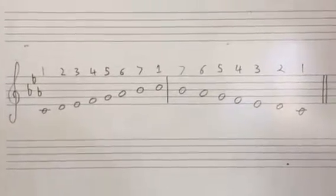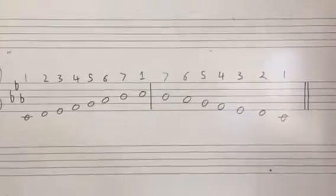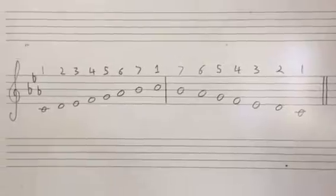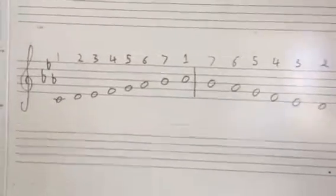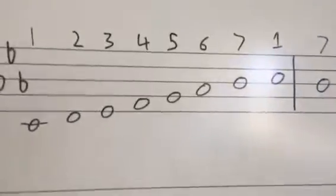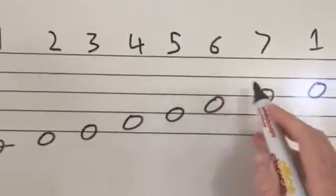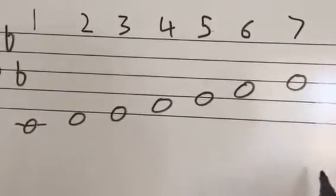This scale is C natural minor and it's got an ascending octave and also a descending octave. The only thing that needs to change in order to change the scale into a melodic minor is when the scale ascends, the sixth note and the seventh note need to be pushed up by one semitone each.